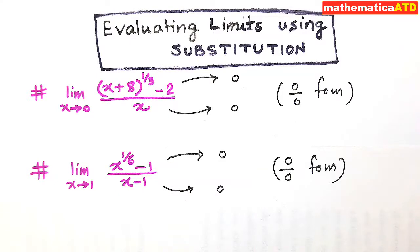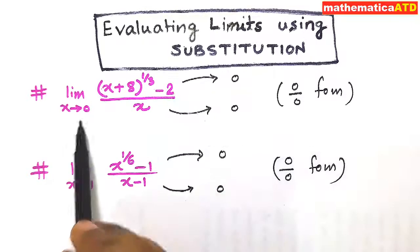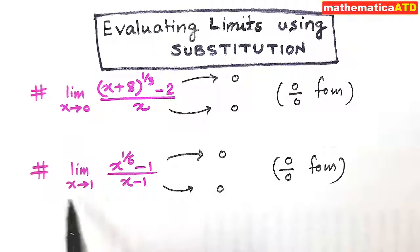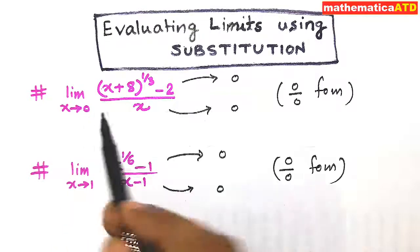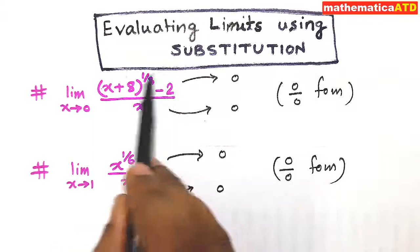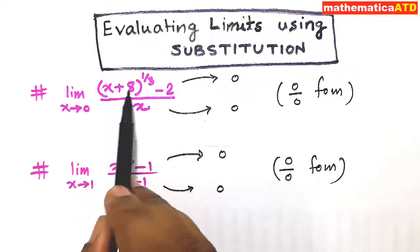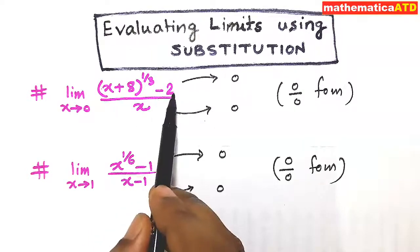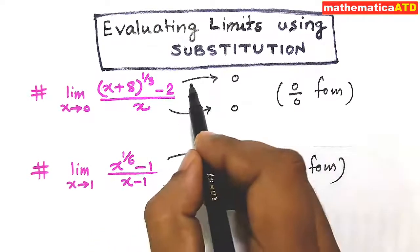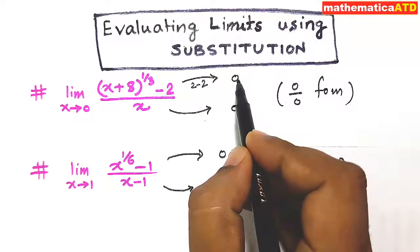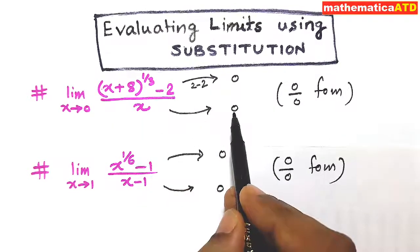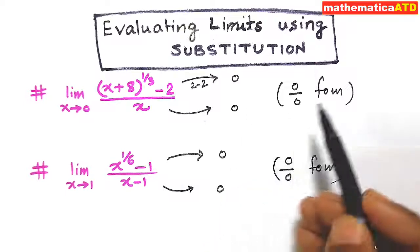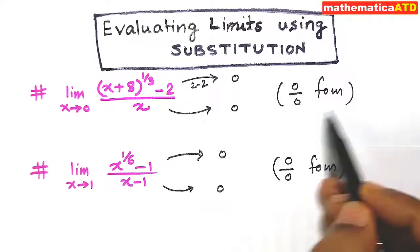In both the examples, you find that the numerator and denominator are simultaneously 0 for the given limiting conditions. When x is equal to 0, the numerator of this example is 0 plus 8 whole to the power 1 third minus 2, means 2 minus 2, that is 0. And for x is equal to 0, the denominator is 0. So in this case, this is of 0 by 0 form.